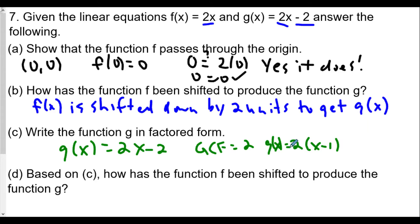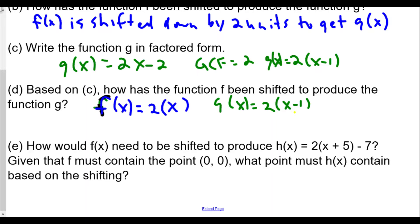Part (d): Based upon part (c), how else can we describe this function f being shifted to produce g? If f(x) = 2x and g(x) = 2(x - 1), we see we have a minus one here, subtracting from the x. According to how we got the answer in part (c), it looks like f(x) is shifted to the right by one to get g(x).